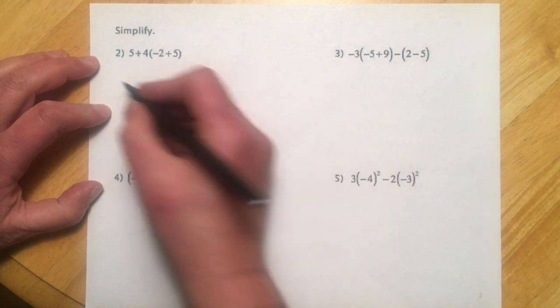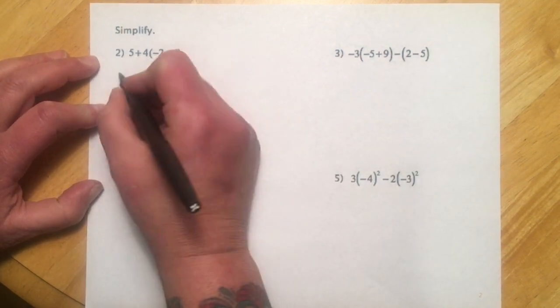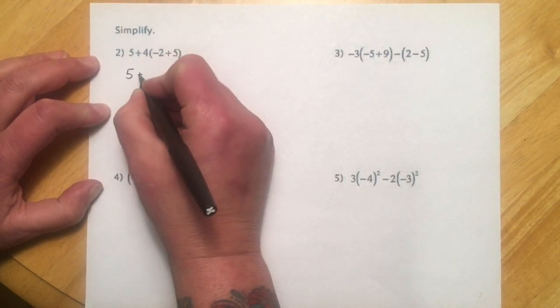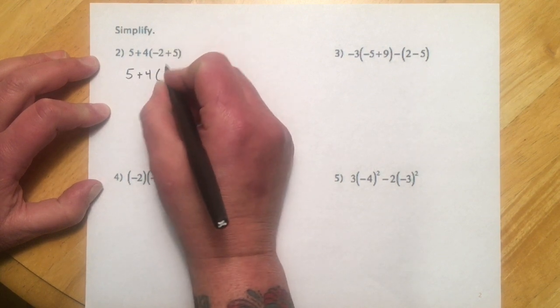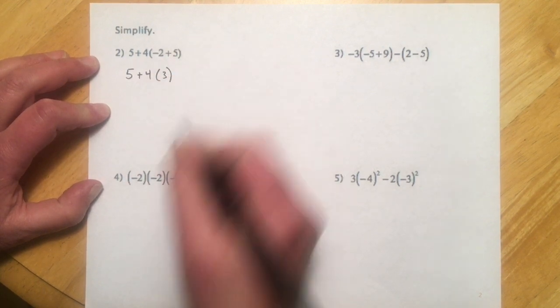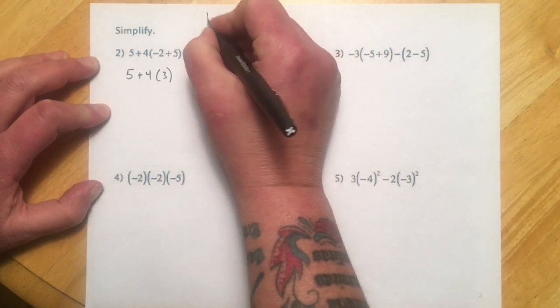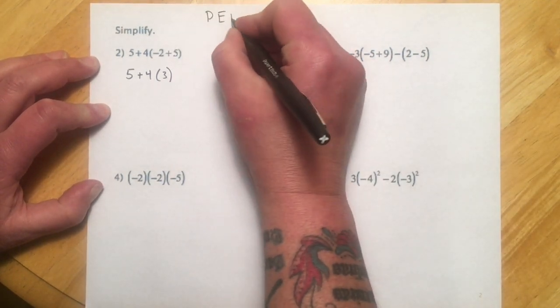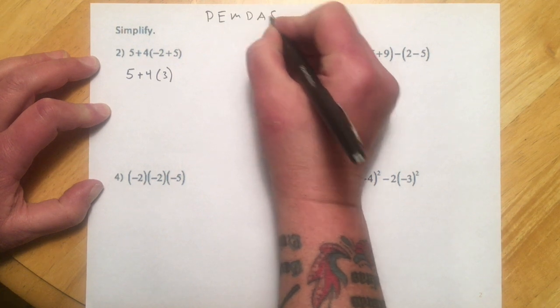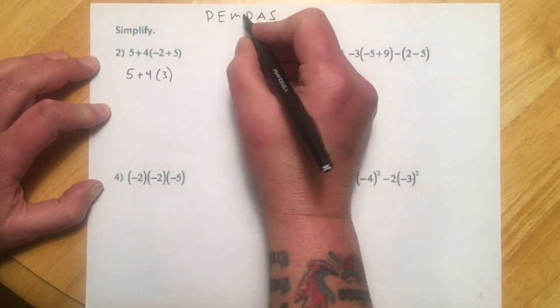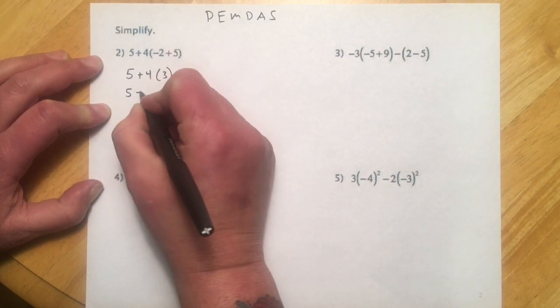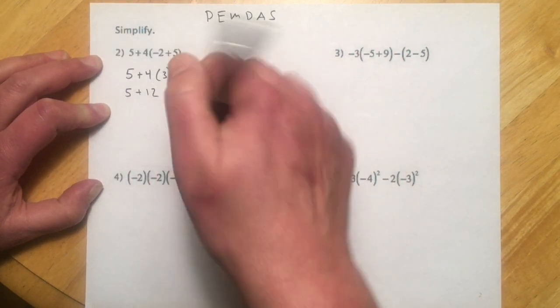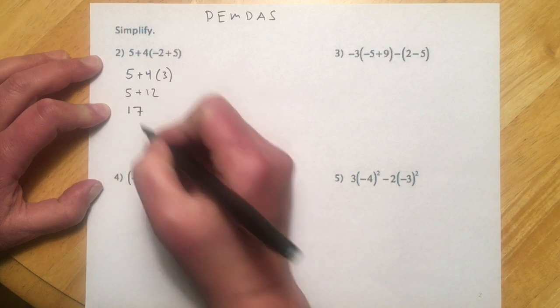So let me show you how that would look here. We want to do inside of parentheses first, so 5 plus 4, and then negative 2 plus 5, that's going to make a 3 right there. And then multiplication, division, we're going to go PEMDAS, we'll do that. So we did our parentheses, the multiplication, division, so we do our multiply first, 5 plus 12, and then our addition last, we get 17.